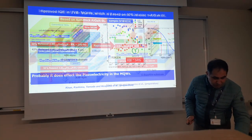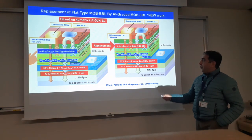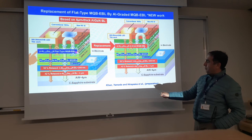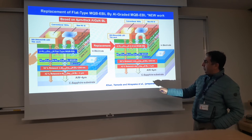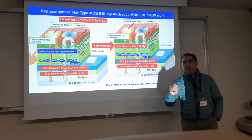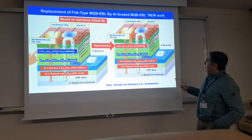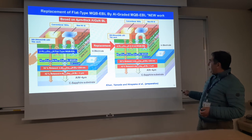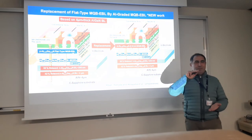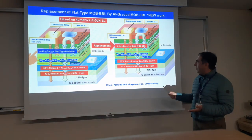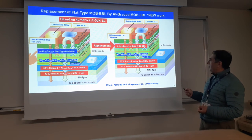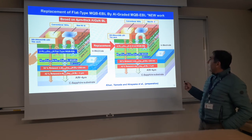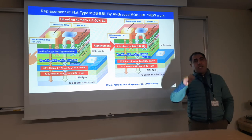Based on this new structure, we made a new device. We moved from our flat-type multi-quantum barrier electron blocking layer to a graded aluminum layer in the new structure. We also used the thick N-AlGaN buffer layer, and additionally a very thin nickel-aluminium P-type electrode, which is highly reflective.